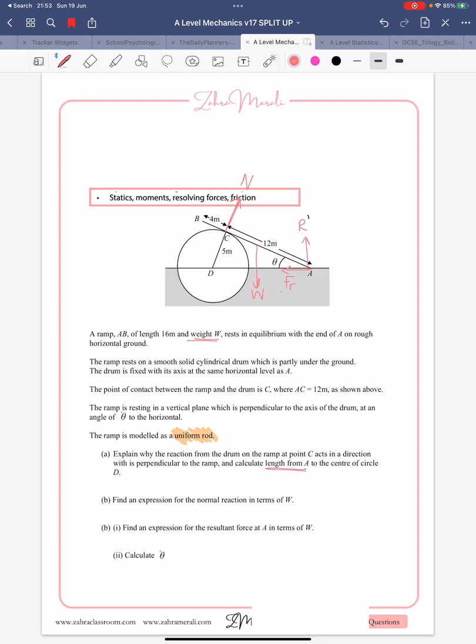Okay, so we know that angle ACD equals 90 degrees, because AB is a tangent to the circle. And by Pythagoras, because we know the other two sides, either you recognise it as a 5, 12, 13 triangle, or you can say the square root of 5 squared plus 12 squared is going to give you 13 metres.